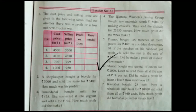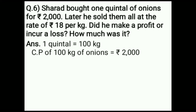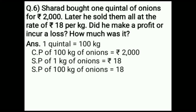Sharad bought 1 quintal of onions for Rs. 2,000. Later he sold them all at the rate of Rs. 18 per kg. Did he make a profit or incur a loss? 1 quintal is equal to 100 kg. Cost price of 100 kg of onions is equal to Rs. 2,000. Selling price of 1 kg of onions is equal to Rs. 18. Selling price of 100 kg of onions is equal to Rs. 18 multiplied by 100, that is Rs. 1,800.